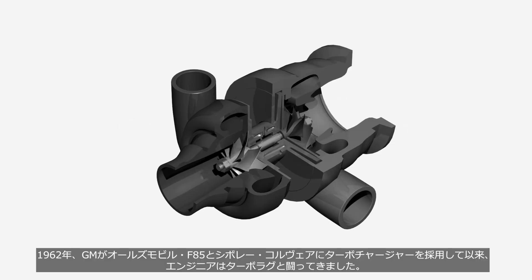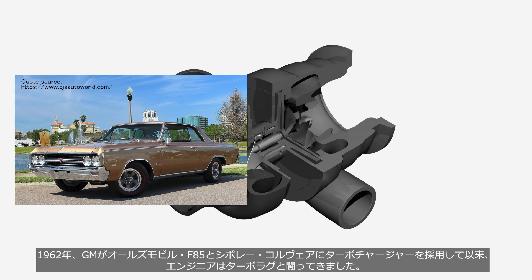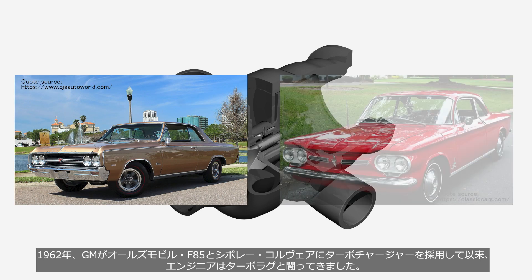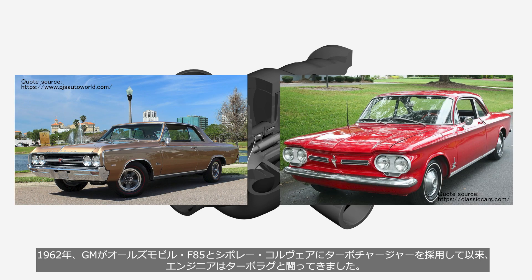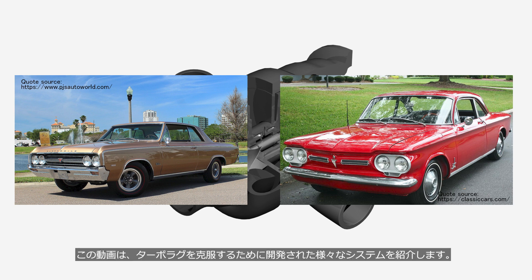Since General Motors introduced turbochargers in the Oldsmobile F85 and Chevrolet Corvair in 1962, engineers have been battling against turbo lag. This video showcases various turbocharger systems developed to overcome turbo lag.